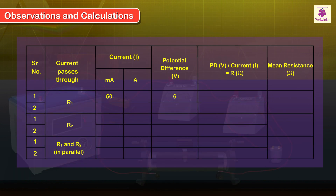Observations and Calculations: For potential difference 6 volts, a current of 50 milliamperes, that is 0.05 amperes, flows through the circuit. Calculate the value of R1 by applying Ohm's law. R1 is equal to 6 upon 0.05, which is equal to 120 ohms.